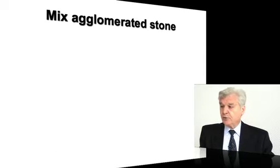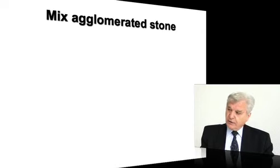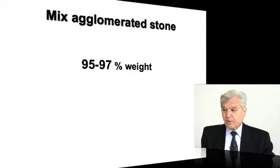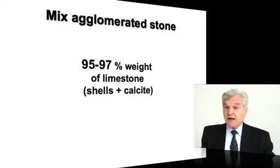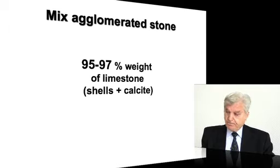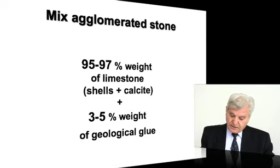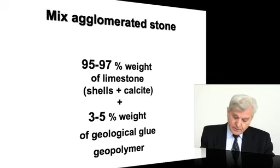In the case of the Giza material, we have an agglomerated stone that is a mixture of 95–97% by weight of limestone — that is, shells, fossil shells, and calcite — to which we add 3–5% by weight of a geological glue that is a geopolymer.